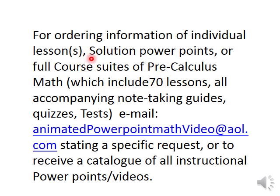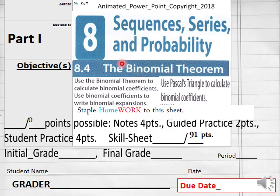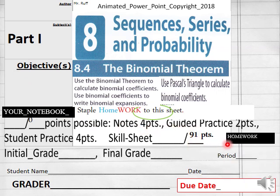Hello everybody, getting ready to do lesson 8.4 part 1 of precalculus math homework today. So in today's homework you have 91 points here students on your homework sheet, name, date, period, or due date for online homeschoolers, the binomial theorem.